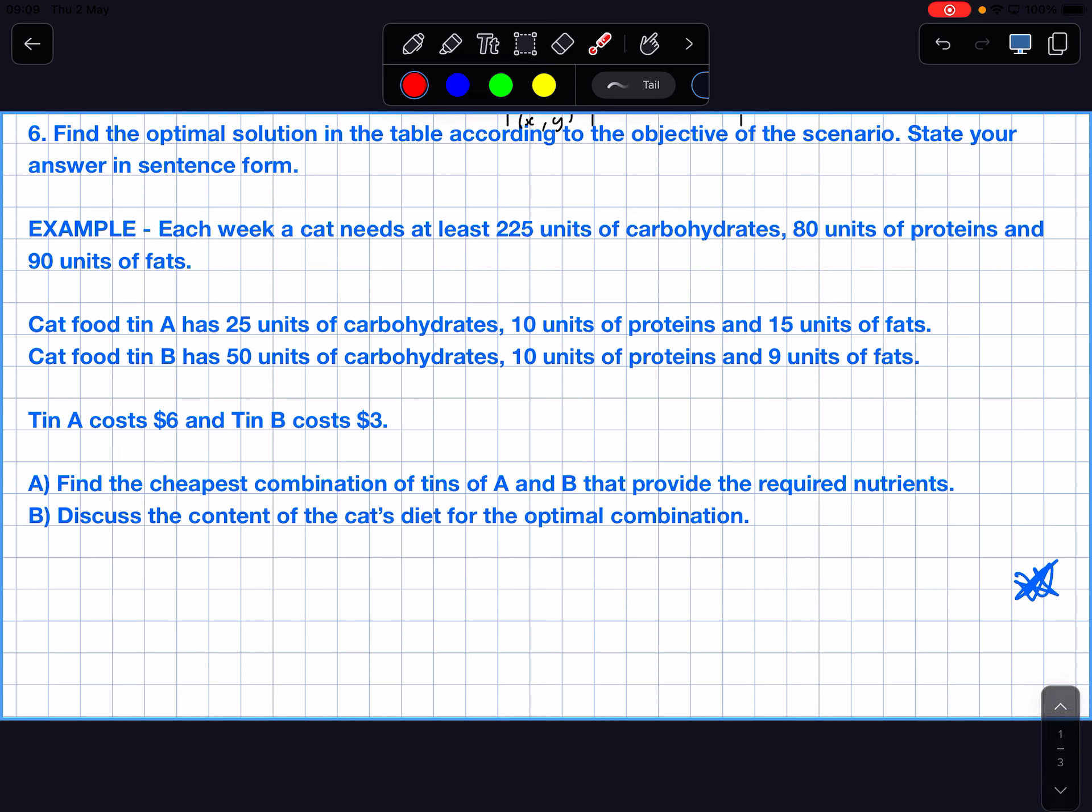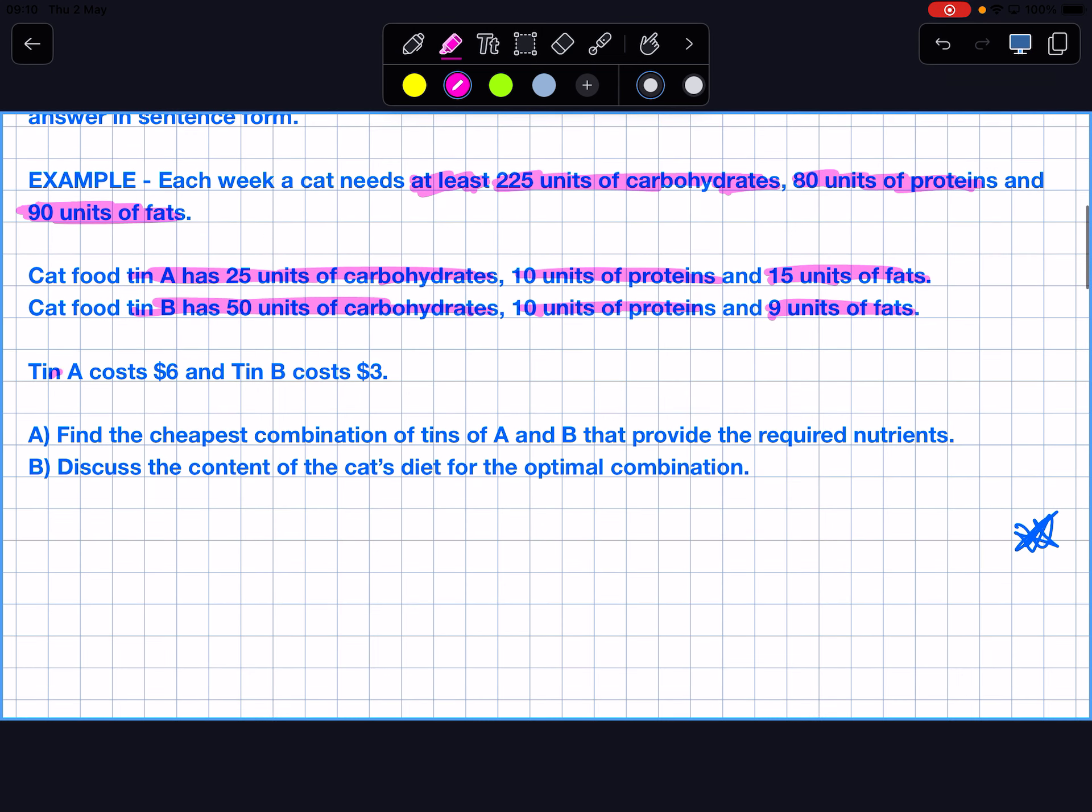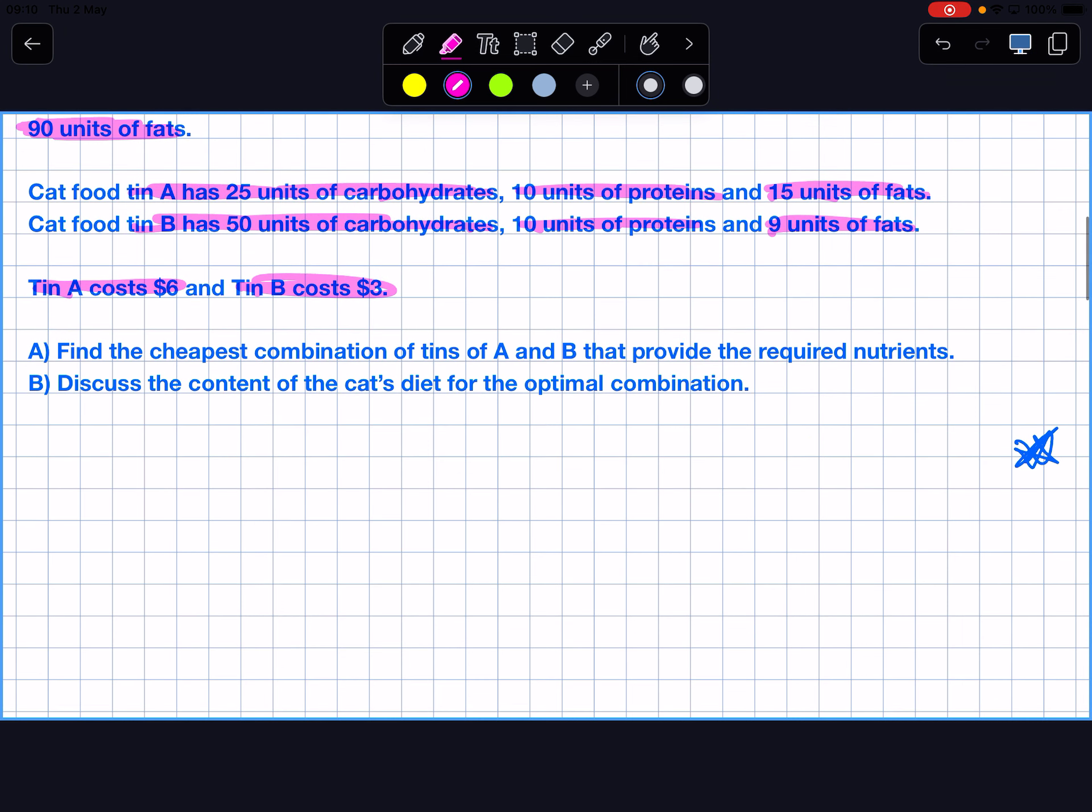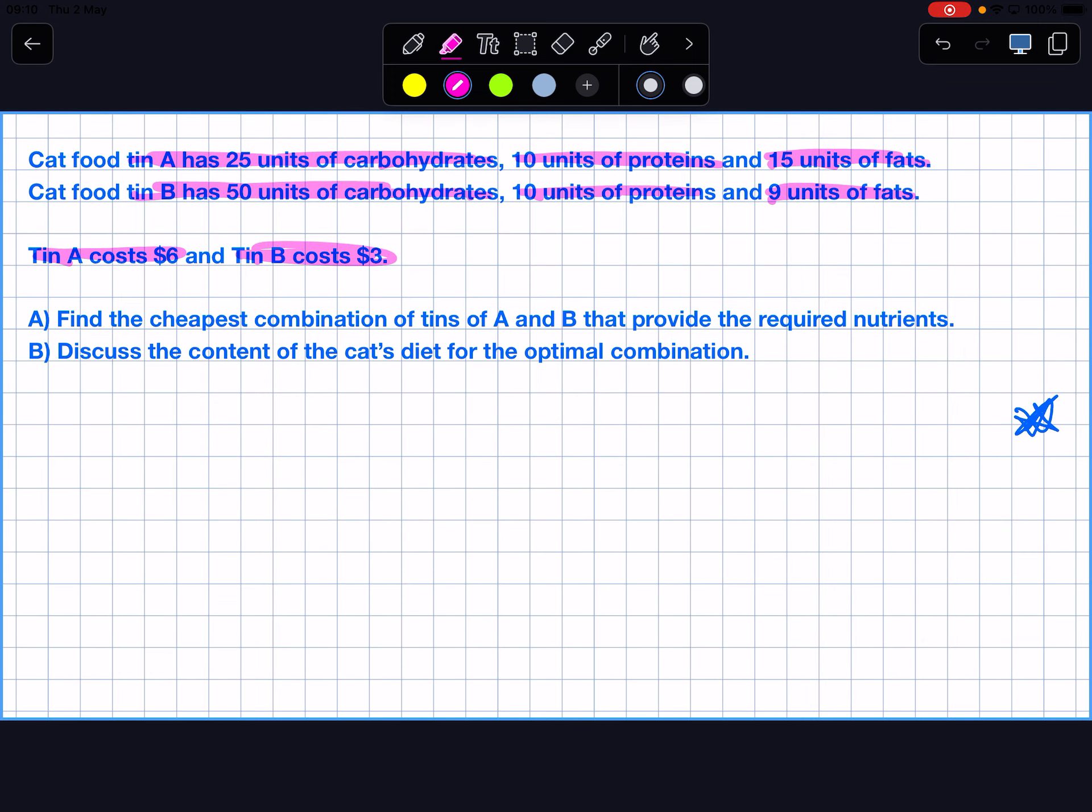Our example was a cat. Each week a cat needs at least 225 units of carbohydrates, 80 units of proteins, and 90 units of fats. Cat food tin A has 25 units of carbohydrates, 10 units of proteins, and 15 units of fats. Cat food tin B has 50 carbs, 10 proteins, 9 fats. Tin A costs $6, tin B costs $3. Find the cheapest combo of tins A and B to get the nutrients. Discuss the content of the cat's diet for the optimal combination.